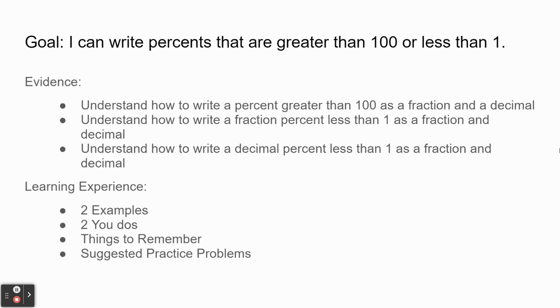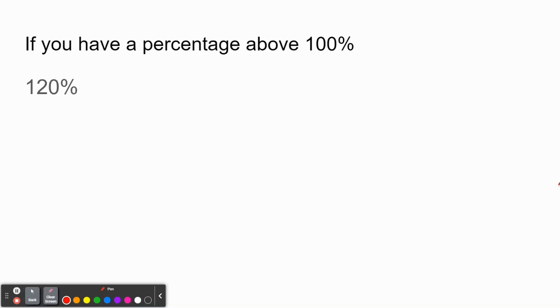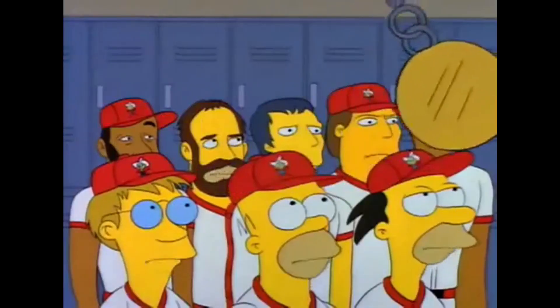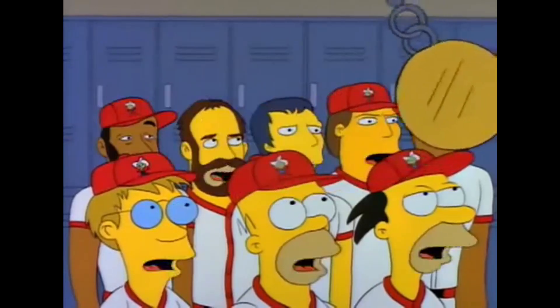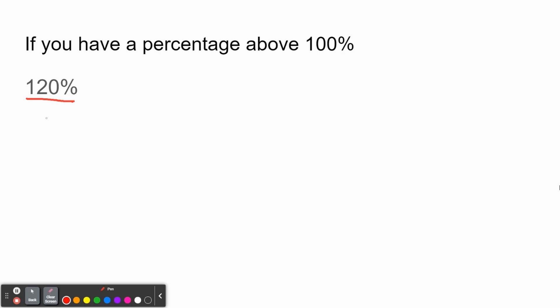And without further ado, let's move straight into our first example for today. So what happens if you have a percentage that's above 100? We could have something like this, 120%. You may have heard somebody at some point say something like, give 110%, but that's impossible. No one can give more than 100%. By definition, that is the most anyone can give. There are still some situations where you can have a percentage above 100%. For example, maybe you're looking at some sort of business growth. Your business has grown by 120%. That's good.